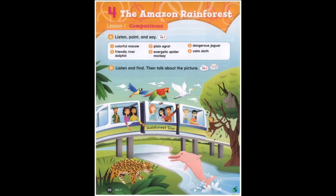Page 30 B. Listen and find, then talk about the picture. Julie, look at that dolphin! Wow, it's pink. Excuse me sir, what kind of dolphin is that? That's a river dolphin. They're very friendly. They live in South America.